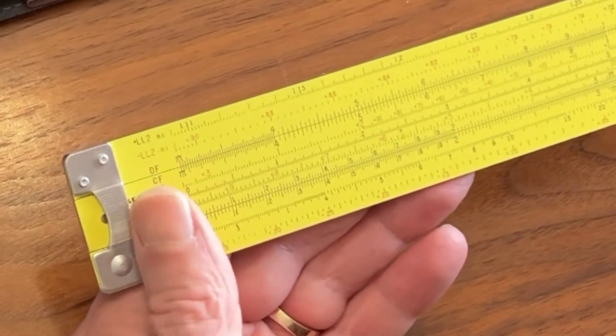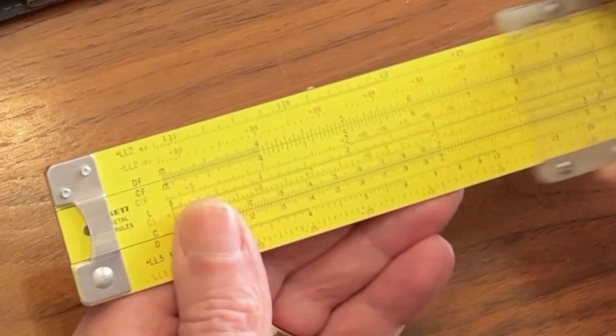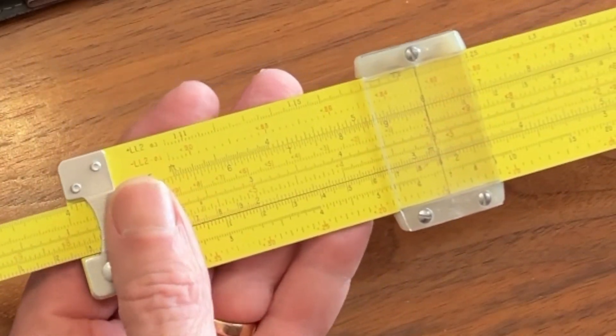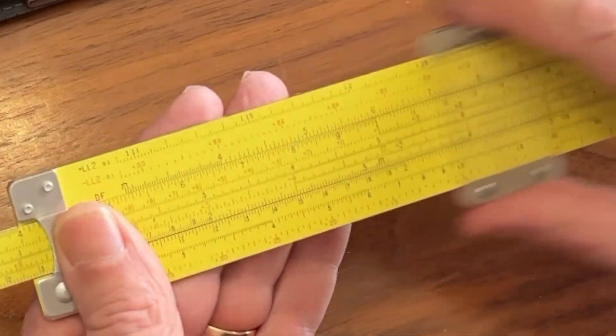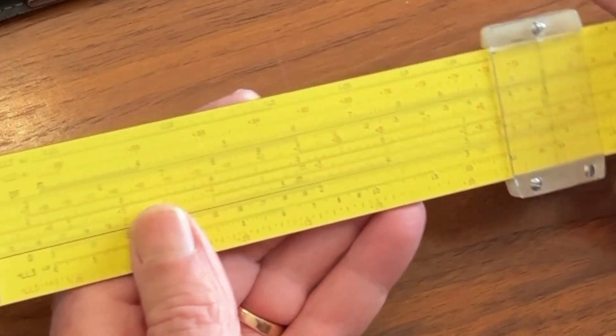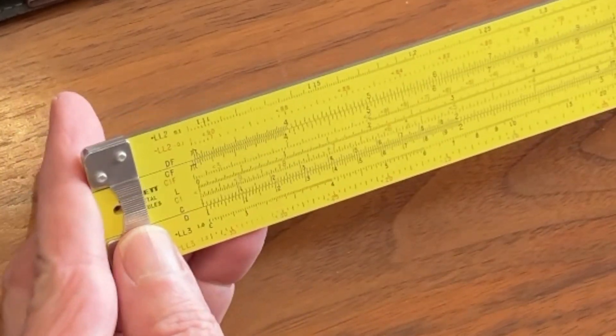Now, with the folded scales, we can pretty much do the same thing. Let's bring our cursor over here to 6, and we'll put our index under it, and then we can come out to, say, 2, and we get our answer right above it, 12. So they all work the same way. So why are they different?